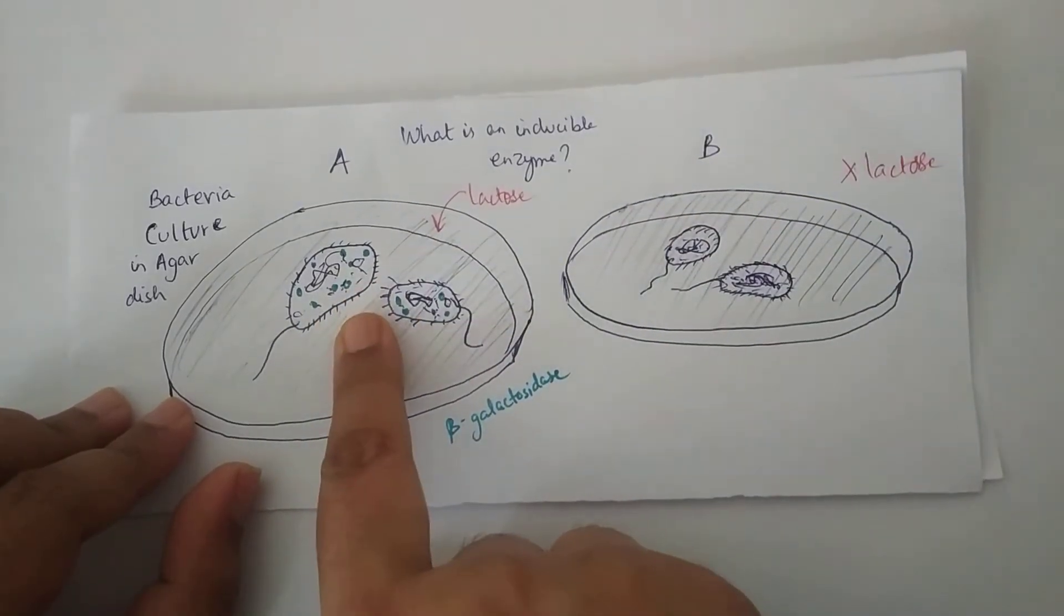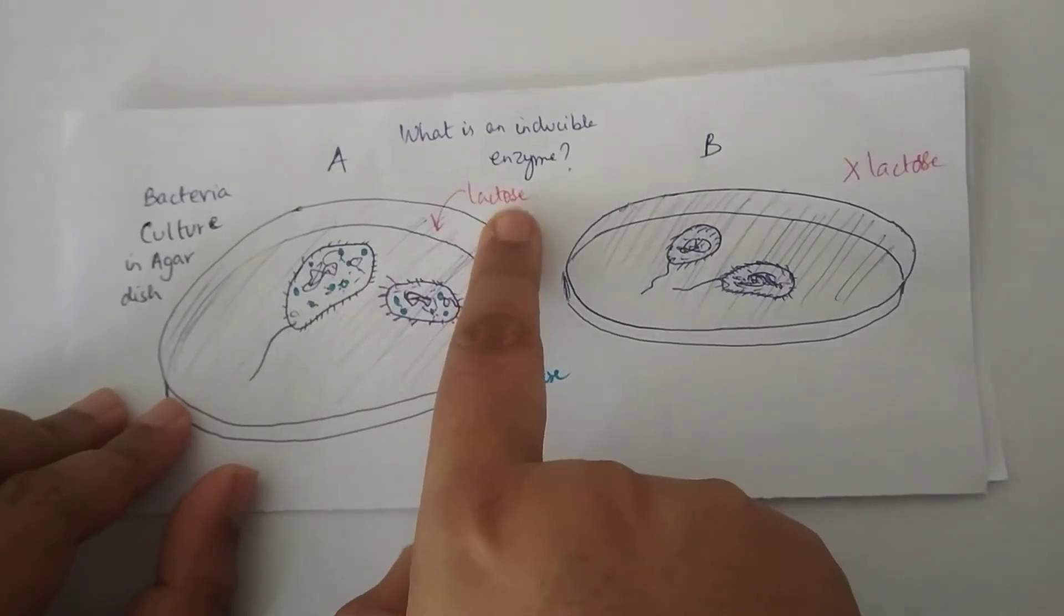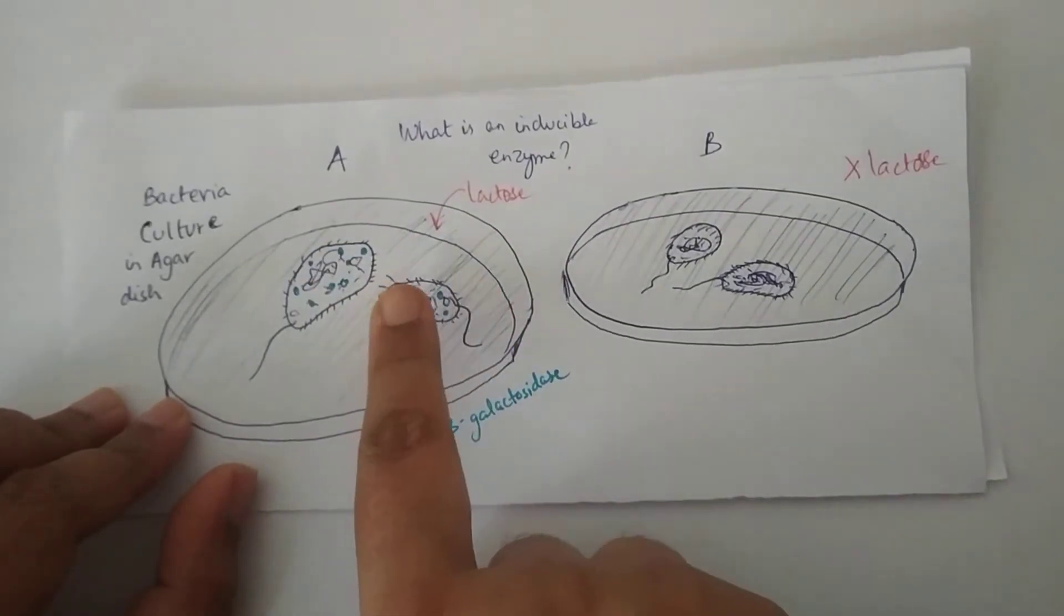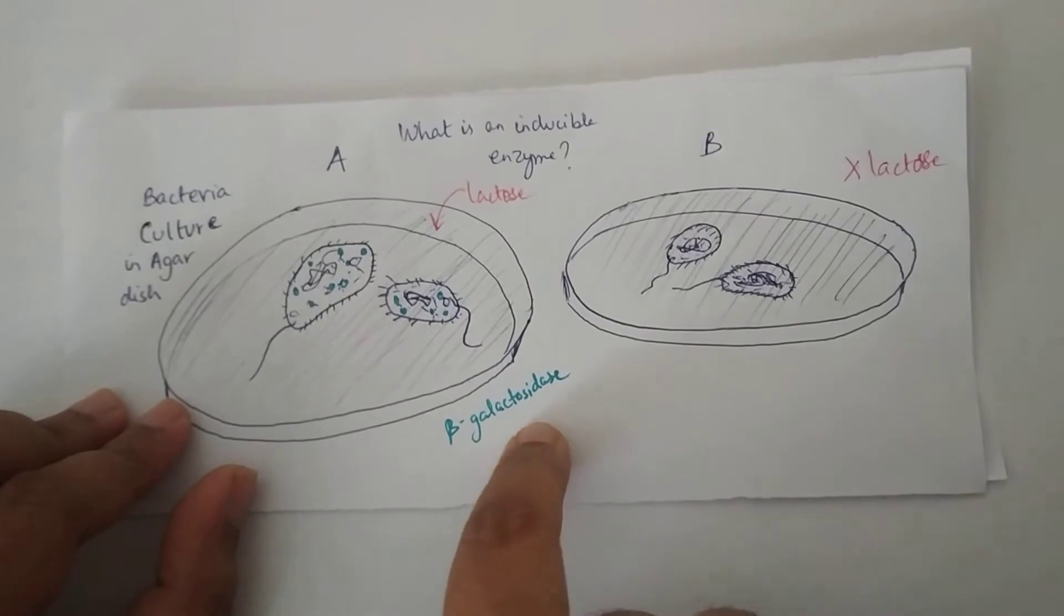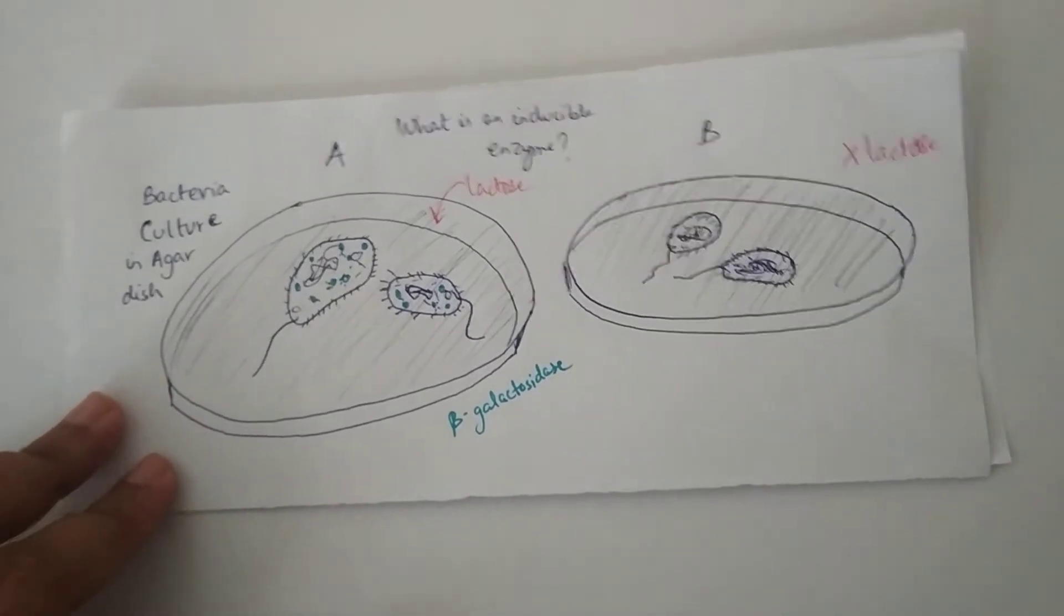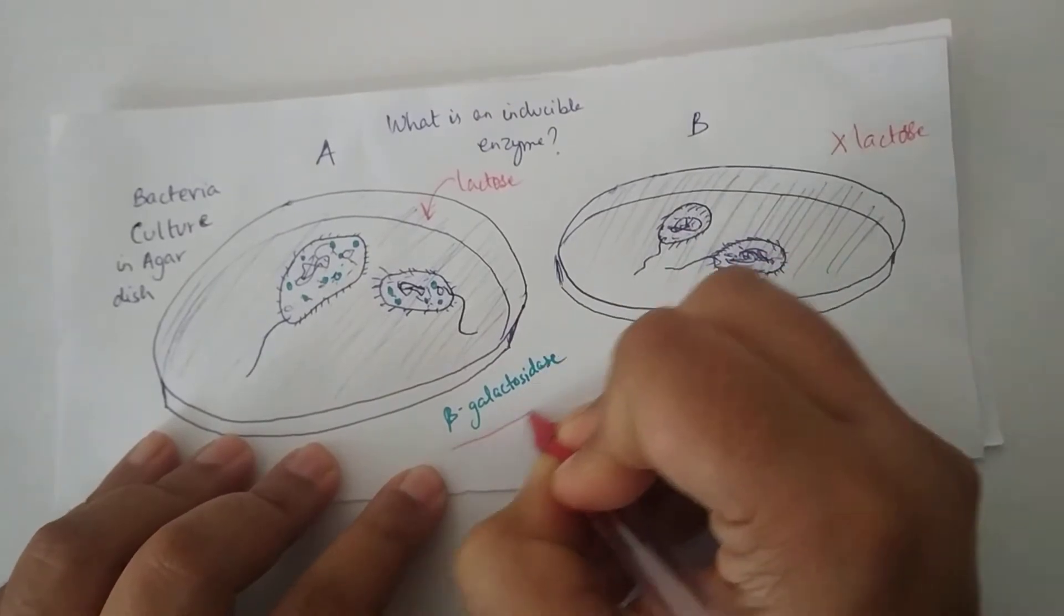To meet their own energy demand they need to break this lactose in this nutrient medium and convert it to glucose and make their own ATP from those glucose. How will they do that? By producing this enzyme beta galactosidase.